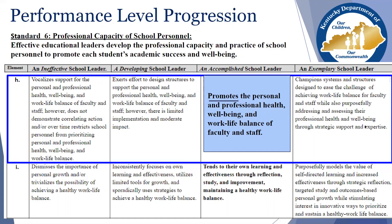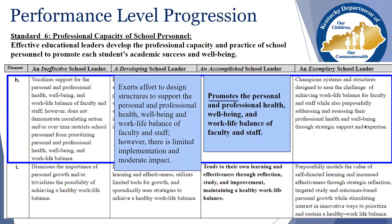Now let's take a step backward and look at the developing performance level. At the developing level, it states that a developing school leader exerts effort to design structures to support the personal and professional health, well-being, and work-life balance of faculty and staff. However, there is limited implementation and moderate impact. A close look at this language indicates the school leader is exerting some degree of effort to support, but there is minimal implementation and insignificant impact. A specific strategy of designing structures is identified as a means of support, thus indicating knowledge and awareness of the need to do something in regard to the expectation of the element.